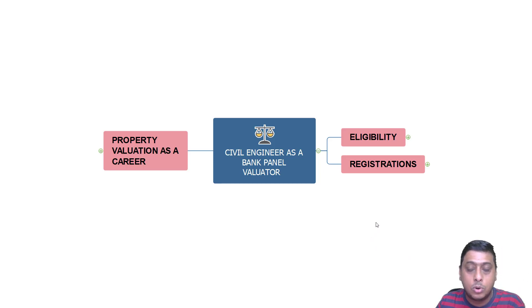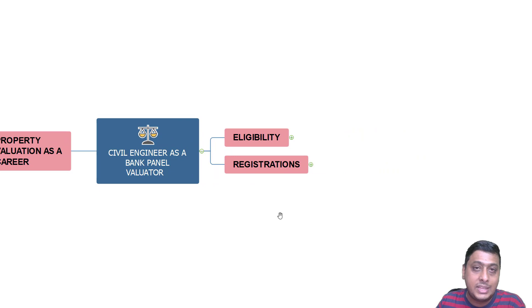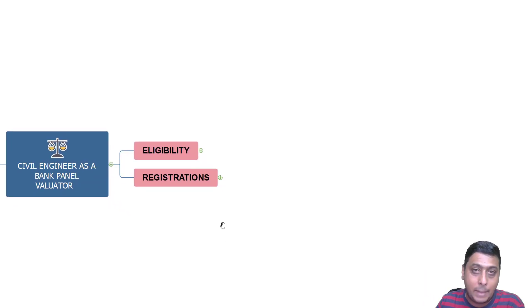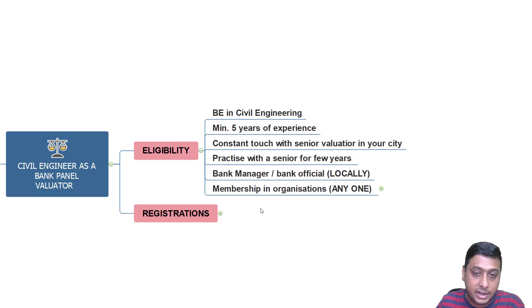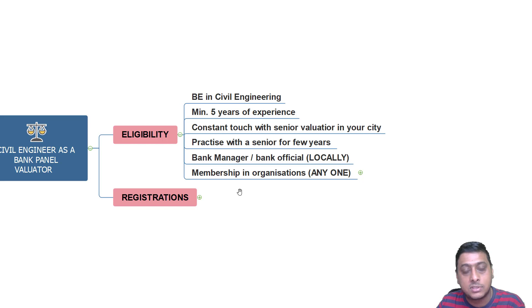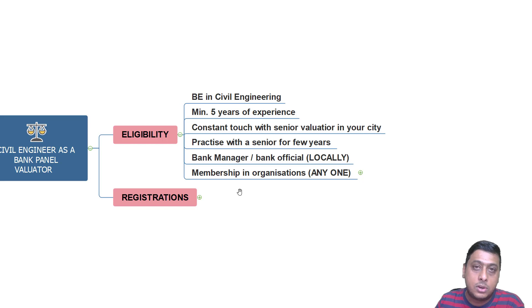We'll see what should be the eligibility criteria for a civil engineer to become a bank panel valuator. First, the eligibility criteria: minimum you should have a BE in civil engineering. A few years back they had also accepted diploma in civil engineering, but diploma civil engineers could previously apply for bank panel valuator — now that has been removed.